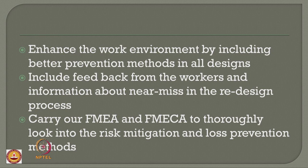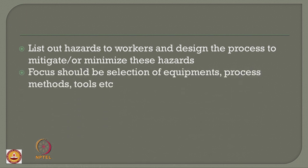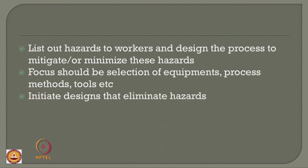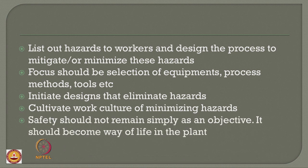These analyses thoroughly look into risk mitigation processes and loss prevention methods to improve safety by redesigning plants and equipment. While doing so, list out hazards to workers and design processes to mitigate or minimize these hazards, with focus on careful selection of equipment, alterations in process methodologies, tools and machinery, so that collectively each improvement results in improving overall safety of the process and plant. Initiate designs that eliminate hazards and cultivate a good work culture of minimizing hazards. Safety should not remain simply as an objective in the plant — it should become a way of life. That is the important role a safety engineer has to play.